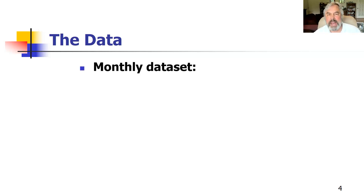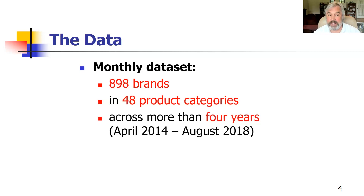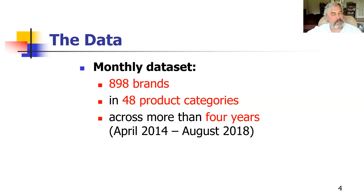The data we have was really the key to this project. In a very macro view, we have a monthly dataset of 898 brands across 48 product categories over four years. We combined data from Kantar, data from YouGov, and some primary survey data. We looked at how much brands spent and whether it affected perceptions of quality as measured by surveys.